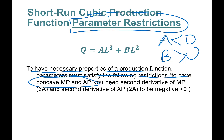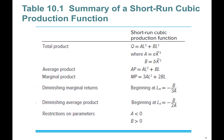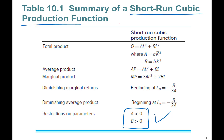To have the necessary properties of a production function, the parameters must satisfy the following restrictions. For concavity of the marginal product and average product curves, you need the second derivative of marginal product and the second derivative of average product to be negative — that means 2a and 6a must be negative. Therefore we need a negative and b positive. In the next part, when we work on regression models, we'll test whether these are indeed true.